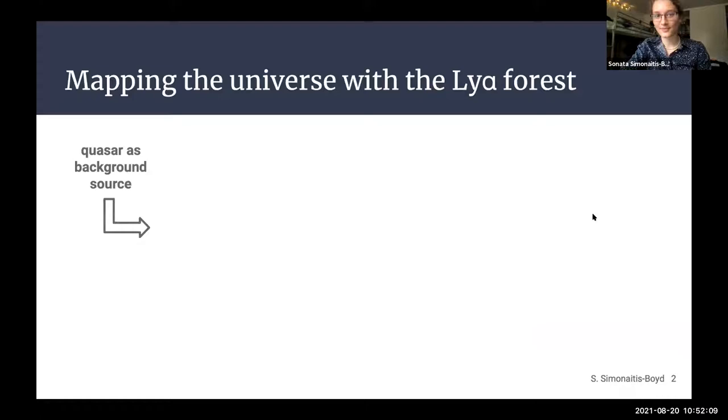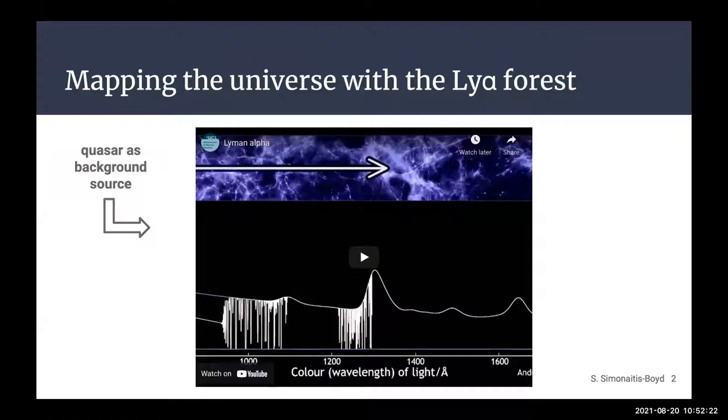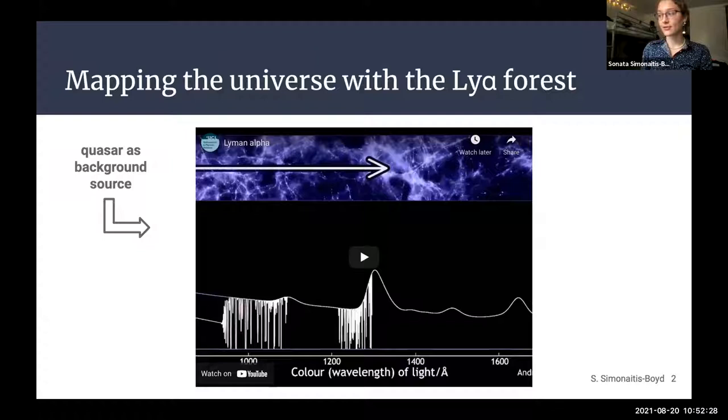So the universe is pervaded with large structures that we call the cosmic web. Now, these are mostly dark matter, but we can use hydrogen gas as a tracer. We can find this hydrogen gas by looking at the spectra of objects behind it. We call these objects background sources. Hydrogen absorbs Lyman Alpha photons, and thus hydrogen absorption only shows up in a specific part of the source spectrum, which is called Lyman Alpha Forest.